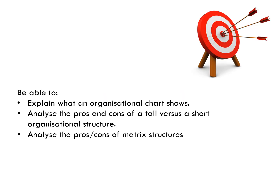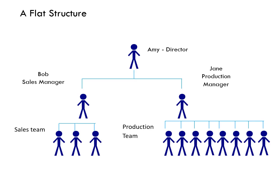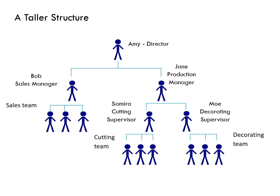We've looked at organizational charts and introduced the idea of tall versus short — now we'll analyze the pros and cons. Amy's business is growing and she plans to hire four more production staff, deciding between two alternative structures: a flat structure with three levels of hierarchy and a taller structure with four levels. The flat structure simply adds the new production staff to the existing department. The taller structure introduces a new hierarchy level with cutting and decorating supervisors in the production department.